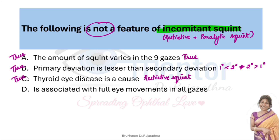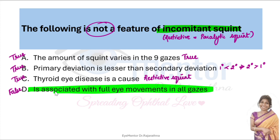Option D states it is associated with full eye movements in all gazes. How can you have full eye movements in restrictive and paralytic squint? That is false. So read the question carefully and you get your answer.